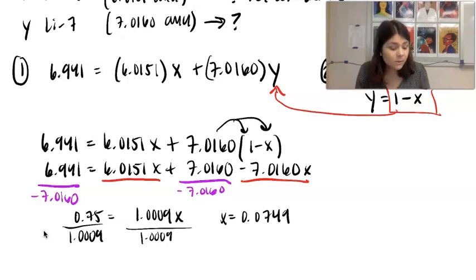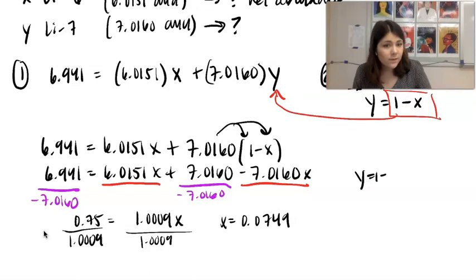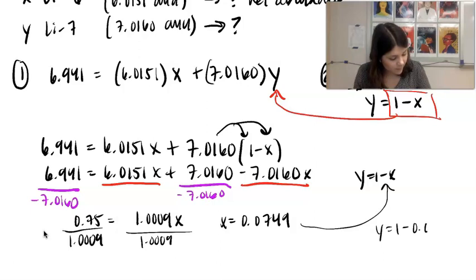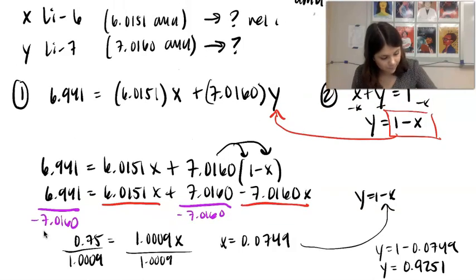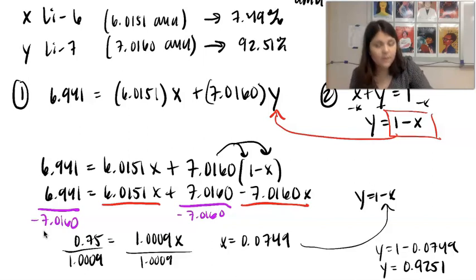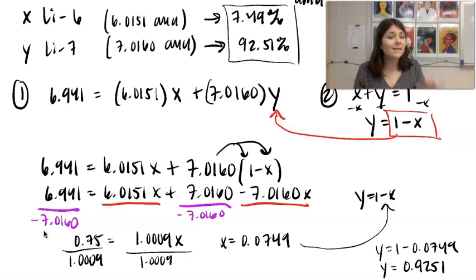Now we can go back to this equation, plug in this X to figure out what Y is. So here Y equals 1 minus this number will end up getting 0.9251. So we have just determined that for lithium-6, it is going to be 7.49%. And for lithium-7, it's going to be 92.51% abundance.